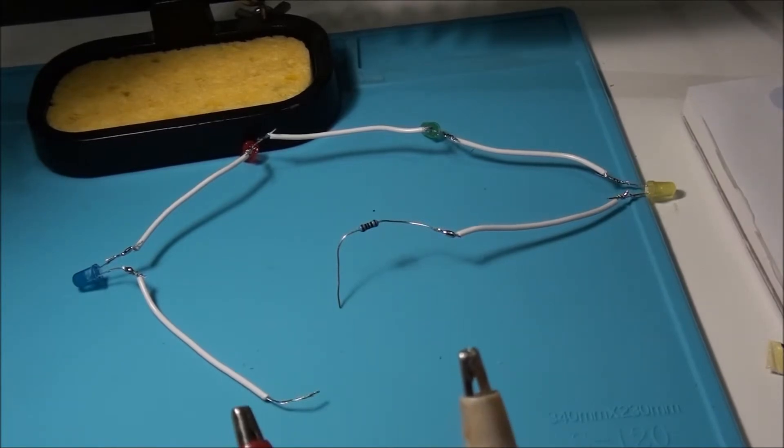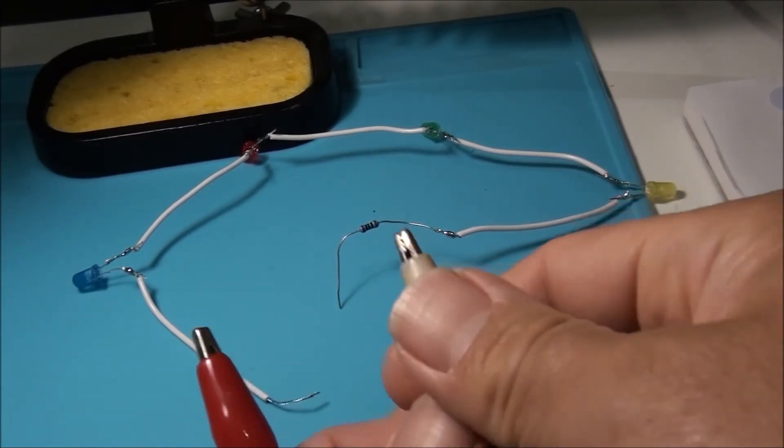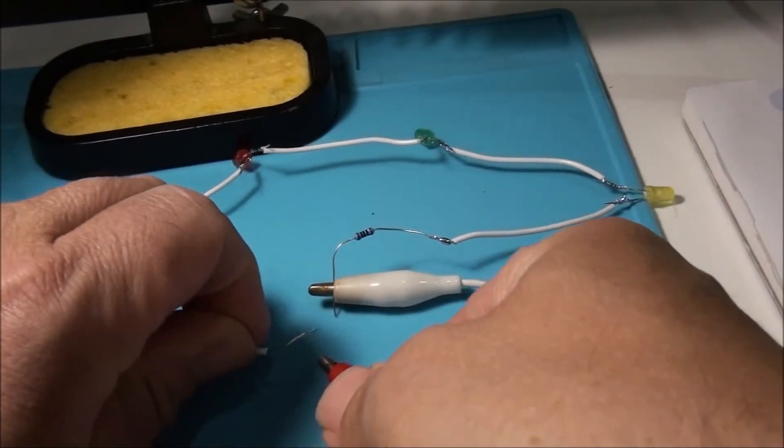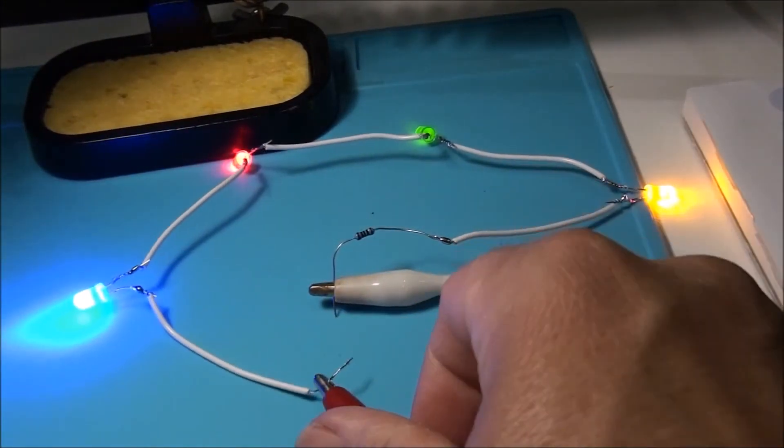And after soldering, retest the circuit to make sure it works. So black to the end, to negative, and red to positive. So that's all good, that works.